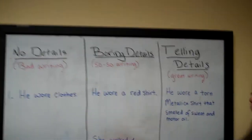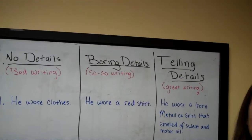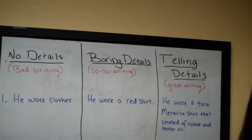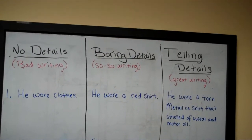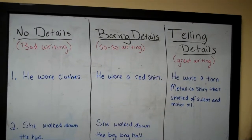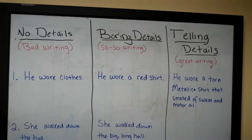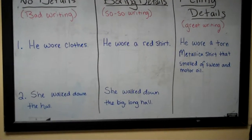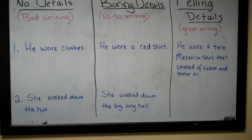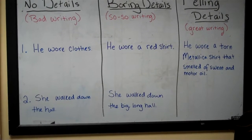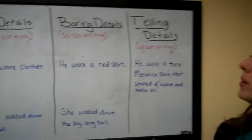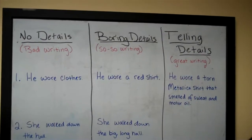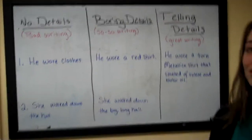A boring detail is just a regular detail — a small piece of information you would think of. So, 'he wore a red shirt' or 'she walked down a big long hall.' There's nothing that exciting about these details, but they do give you a little more information. No details is bad writing; boring details is so-so writing — a little better.